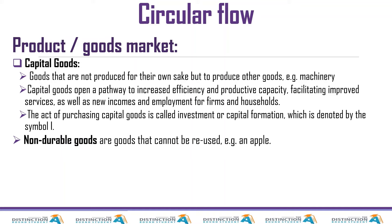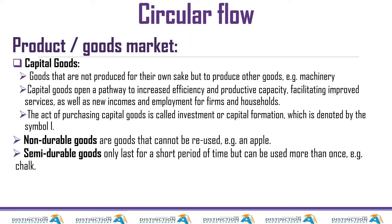Non-durable goods are goods that can only be used once — for example, an apple. We consume it once and it's gone. Semi-durable goods are different because they can last more than once — you can use them multiple times but not for a very long time. For example, a pen: you can use it now, put it away, and use it again tomorrow or next month, and you can use it a couple of times, but eventually it runs out.